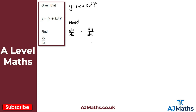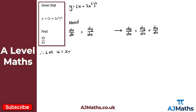Once we've got du/dx and dy/du, we can find dy/dx by taking their product: dy/du times du/dx. To get these, I use the substitution that the inside of the bracket is u. So we let u equal x plus 2x cubed. We can then find du/dx.